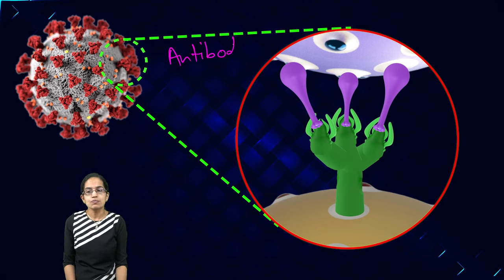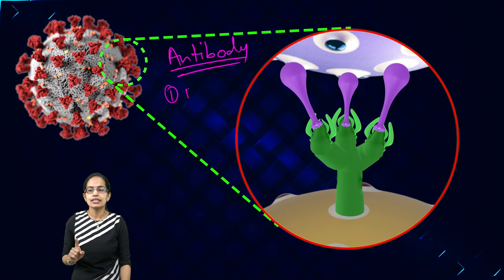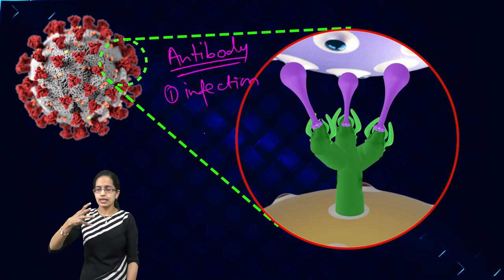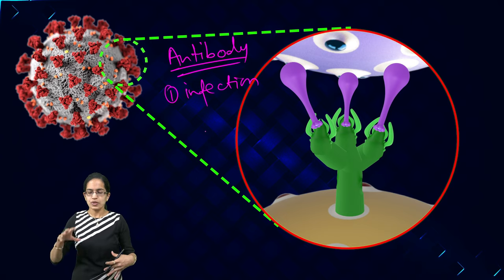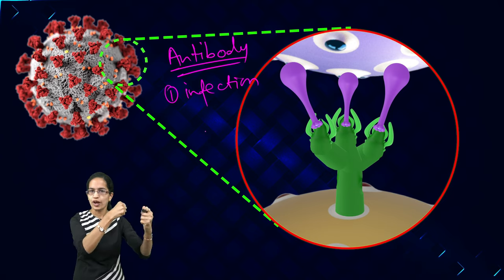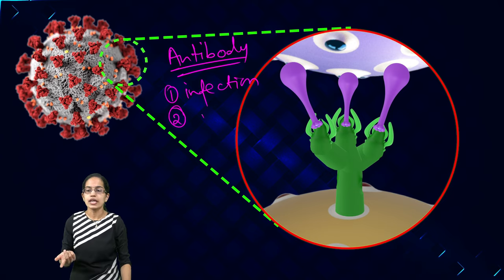Antibody is a response generated by the immune system in two cases. One is either there has been a prior infection and the person has generated antibodies. Those remain dormant in the body. Once there is a virus that enters, they activate and they start to fight again. That is a single way. The second way is vaccine.